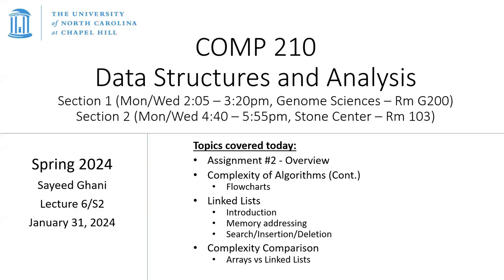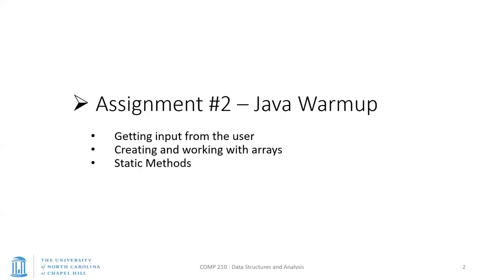Next, we will start talking about a completely new data structure. So far we've only looked at array data structures, and today we will introduce linked lists, which is a completely alternate way of handling data. I don't think we'll actually get to the complexity comparisons but let's see how far we get. Assignment number two — I hope quite a few of you have actually looked at it. Basically this is going to make sure that you know how to get input from the user and handle different data types when users are putting in integers versus doubles versus strings, and then manipulate that inside arrays.